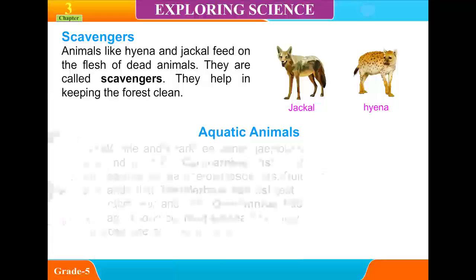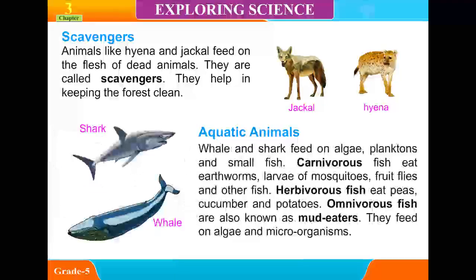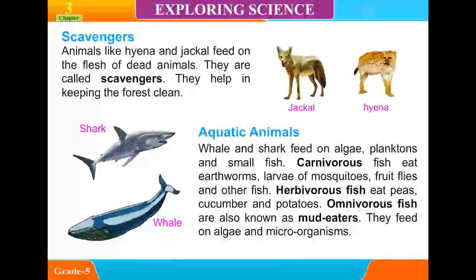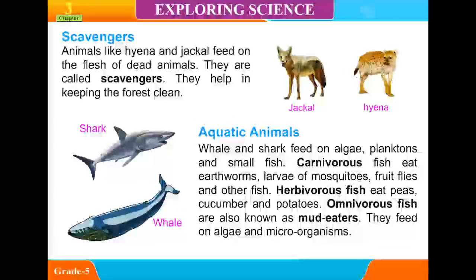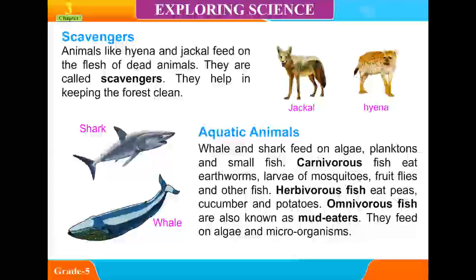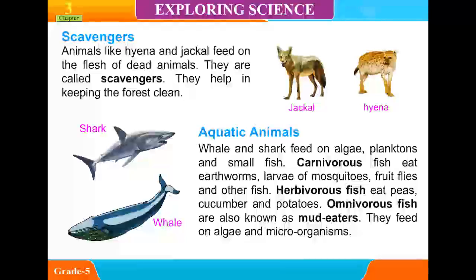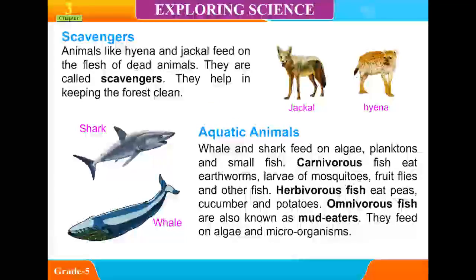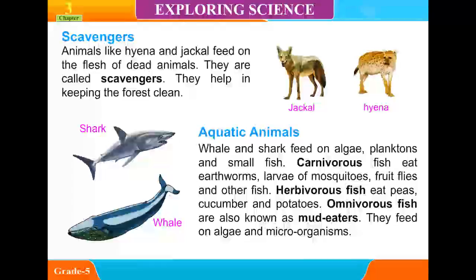Aquatic Animals: Whale and shark feed on algae, planktons, and small fish. Carnivore fish eat worms, larvae of mosquitoes, fruit flies, and other fish. Herbivore fish eat peas, cucumber, and potatoes. Omnivore fish are also known as mud eaters; they feed on algae and microorganisms.